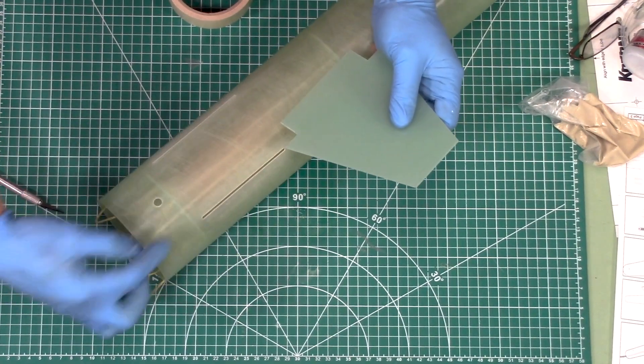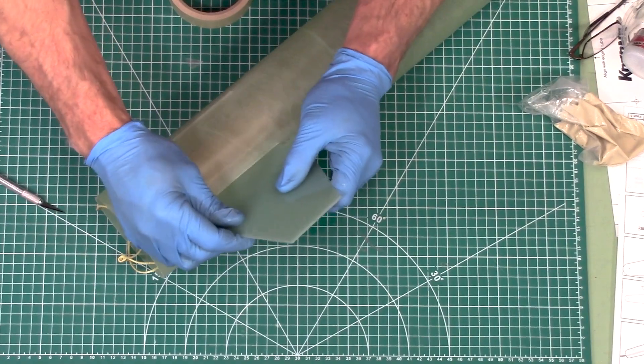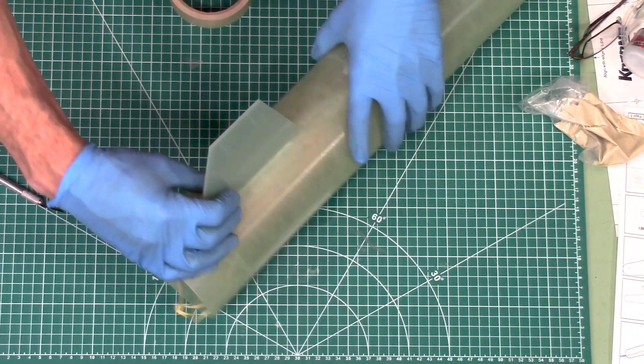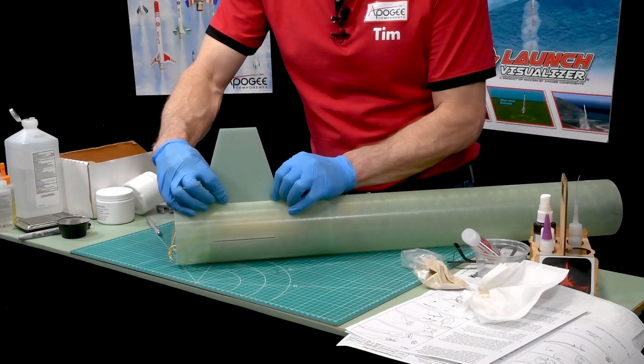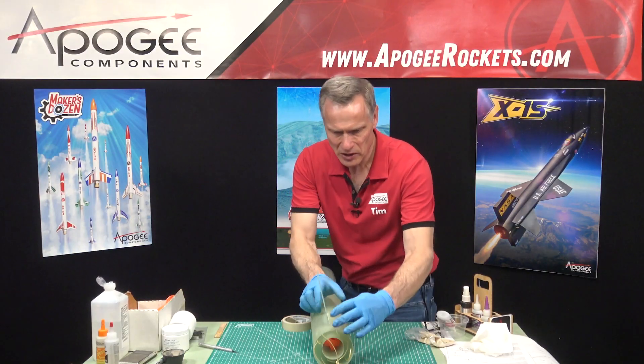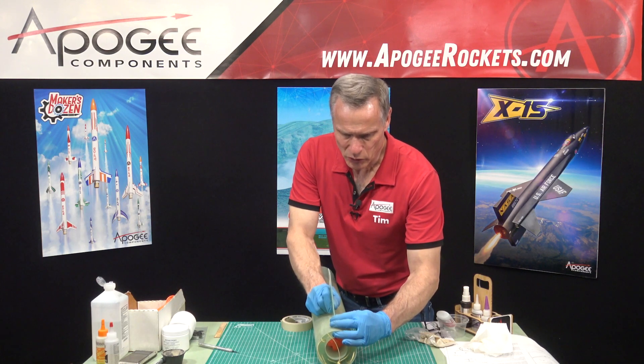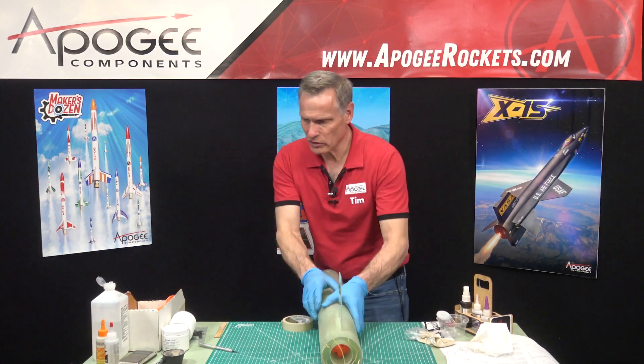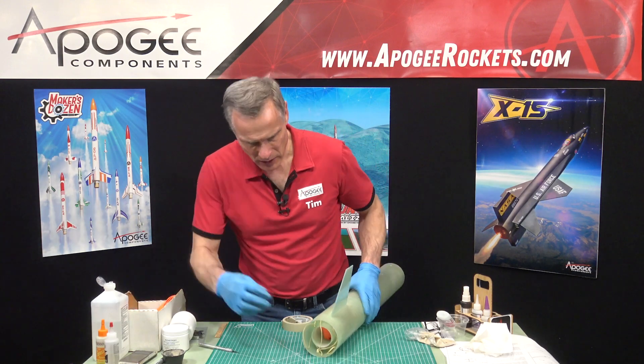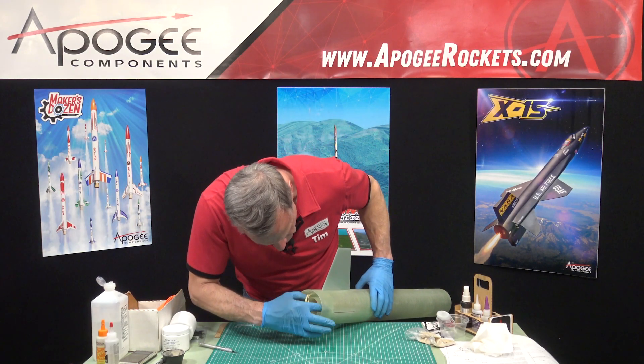Just make sure that that centering ring is not in the way of the fins going in, and then push it in and make sure it's perpendicular to the tube. It grabbed really quick which is really nice. That's one fin. I want to make sure I don't glue my ring into place.